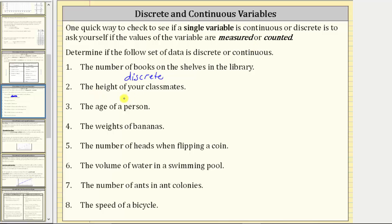Number two, we have the height of your classmates. We measure height. This is continuous data. Also, the height of your classmates can take on any particular length over a particular interval, which is another reason why this is continuous data.